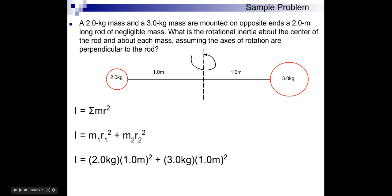So, in this equation, there's basically going to be one expression for every mass. In other words, there's going to be one MR squared for every mass. We've got two masses here, so we've got two MR squareds.